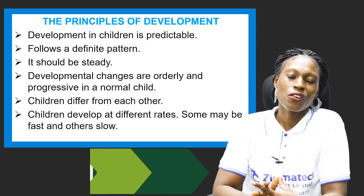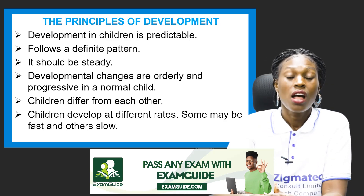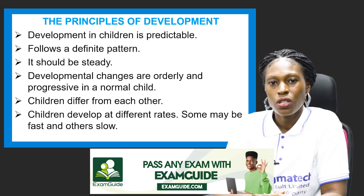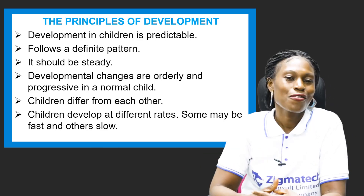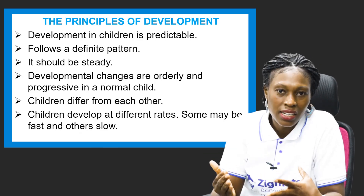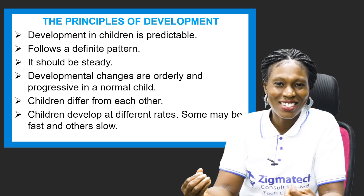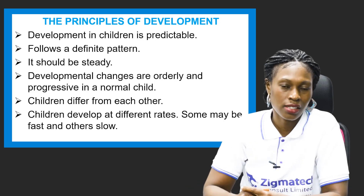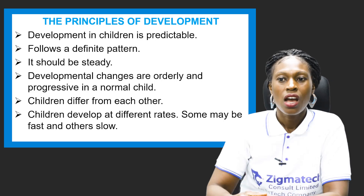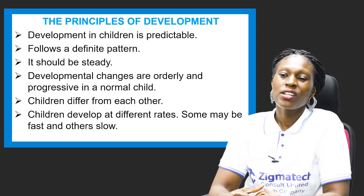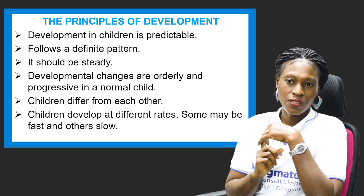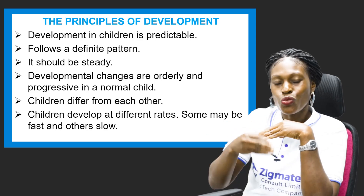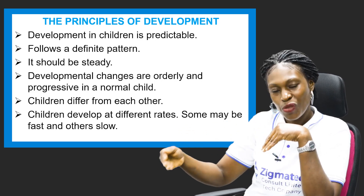What are the principles of development? Development in children is predictable — it follows a definite pattern because you know what is expected at every stage in time. When this is not happening, you would have to worry. Development changes are orderly and progressive in a normal child. It's orderly — you cannot jump one stage and progress to the other. You follow it progressively. Also, children differ from each other — children develop at different rates. Some may be slow and some may be fast.